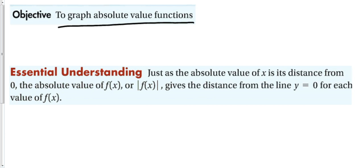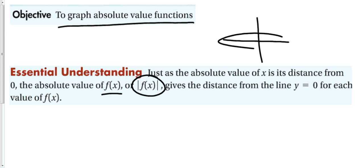Our essential understanding — what you should know by the end of this section — is that just as the absolute value of x is its distance from 0, the absolute value of f(x) gives us the distance from the line y = 0 for each value of f(x). So our graphs are going to represent distance from the line y = 0, which is how far away we are from the x-axis. This gives absolute value functions and graphs a very unique look.